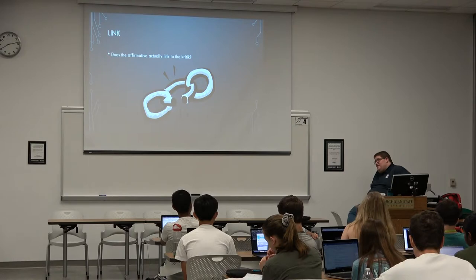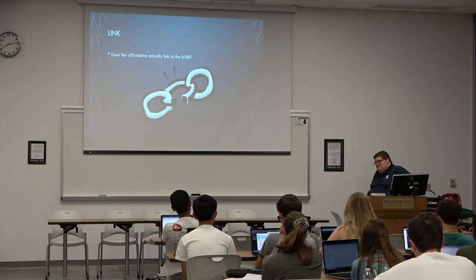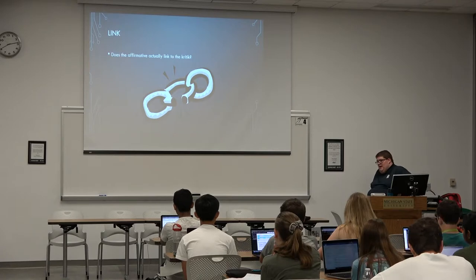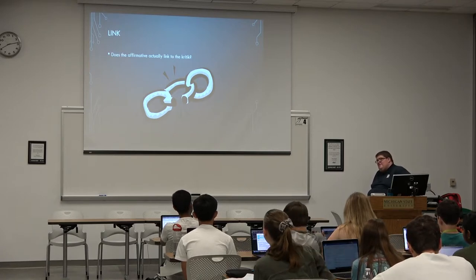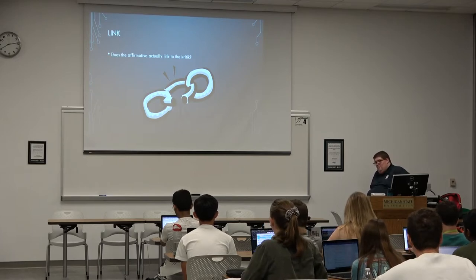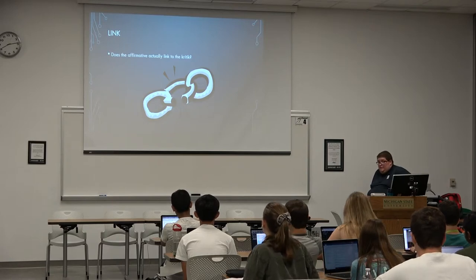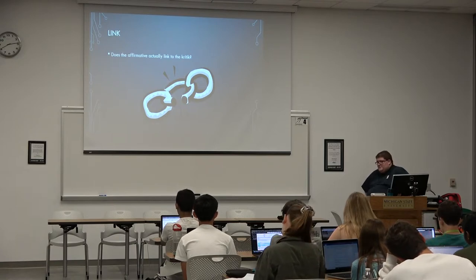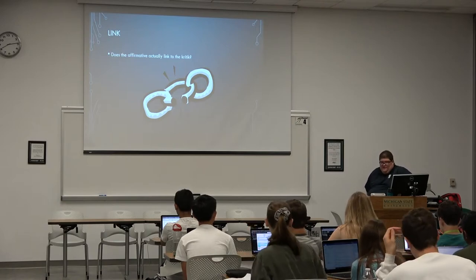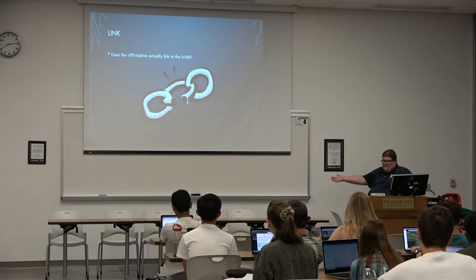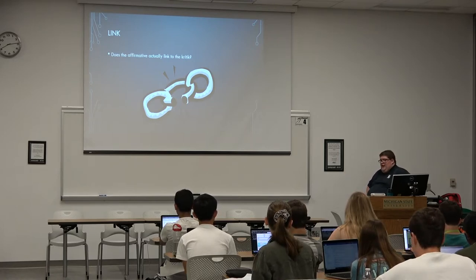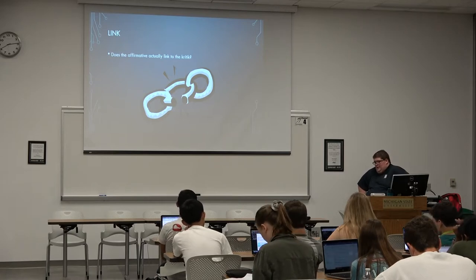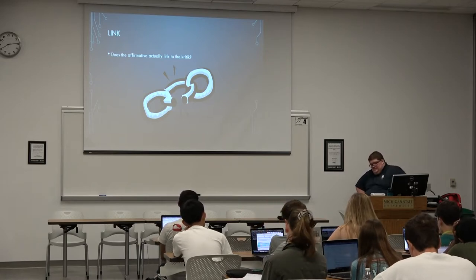Sometimes it's not worth going for the link turn. If the negative reads a criticism about why expanding democracy is violent, and you read a Taiwan democracy impact, you can't say 'no link, you don't understand democracy' — that's literally what the plan does. But if it doesn't link, say so. Don't let the negative get away with not even making a link argument. Point out that there's not a link, just like anything else — just like a T argument that doesn't apply to your part of the resolution.